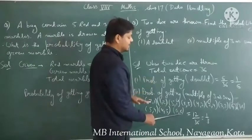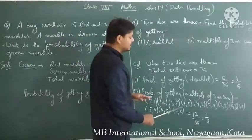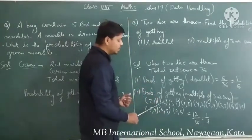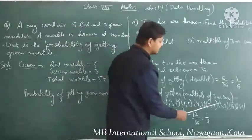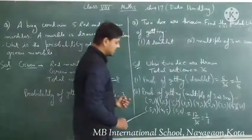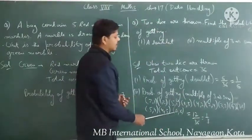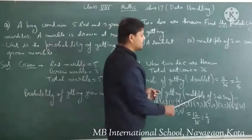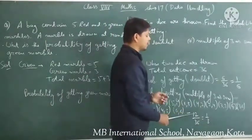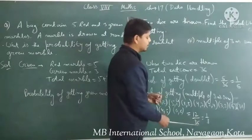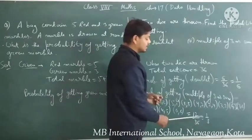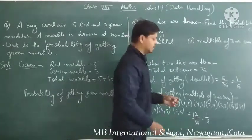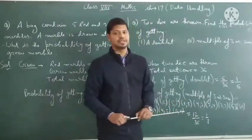Counting the cases that give a multiple of 3 as a sum: 1, 2, 3, 4, 5, 6, 7, 8, 9, 10, 11, 12 — so there are 12 favorable cases. Probability of getting a multiple of 3 as a sum is 12 divided by total number of cases 36, that is 1 upon 3. Hope you understand this video, thank you.